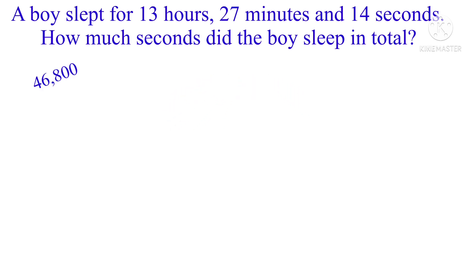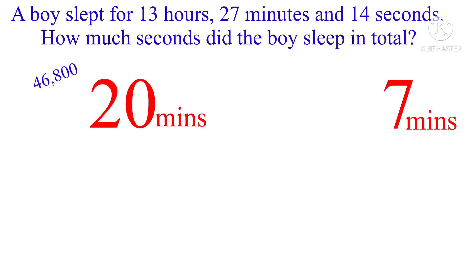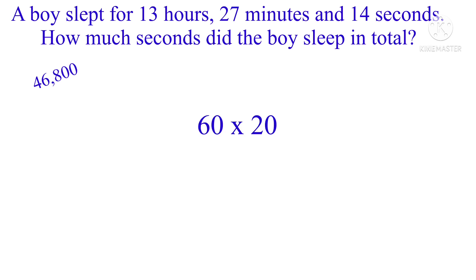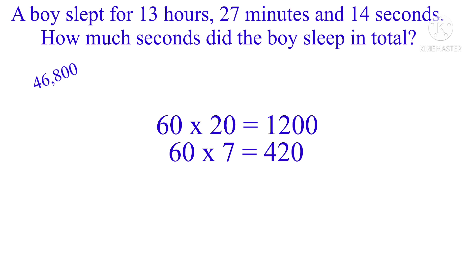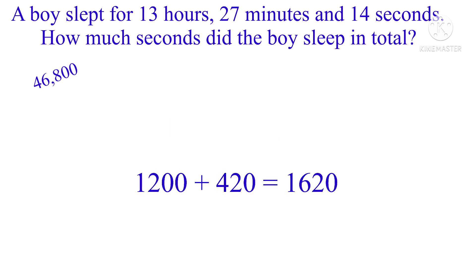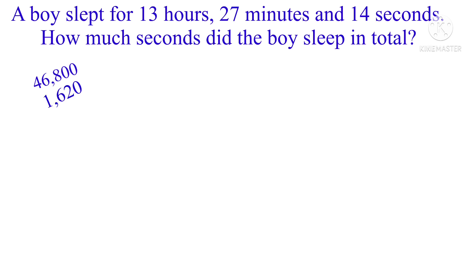Now looking at 27 minutes — how many seconds is that? Let's split it into 20 minutes and 7 minutes. 20 minutes means 60 times 20 seconds, and 7 minutes means 60 times 7 seconds. Add the products together and you get 1620. So 1620 seconds means 27 minutes.